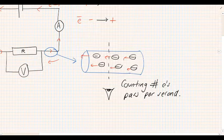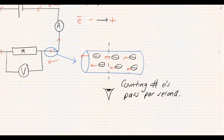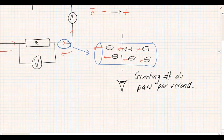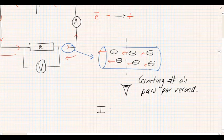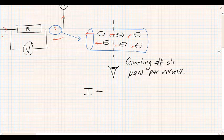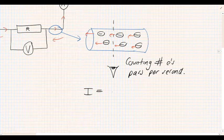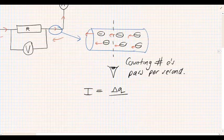Now that is pretty much what current is. Current is the amount of charge passing a point per second, or the rate at which charge flows per second. So current is defined as I for current, the amount of charge per second.